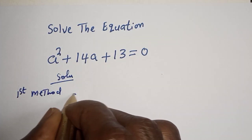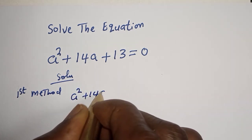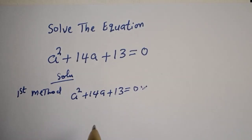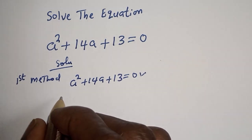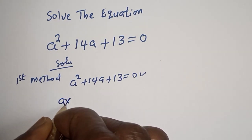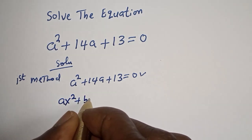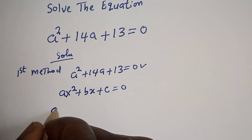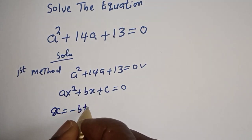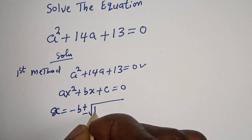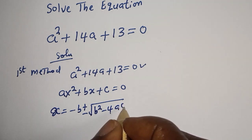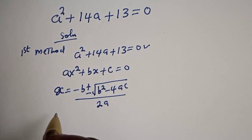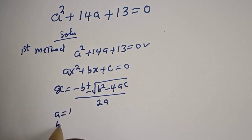The given question is a squared plus 14a plus 13 is equal to zero. This is a quadratic equation, and let's use the quadratic general formula. In the quadratic general formula we have a·s squared plus b·s plus c is equal to zero, then s is equal to minus b plus or minus square root of b squared minus 4ac, over 2a.